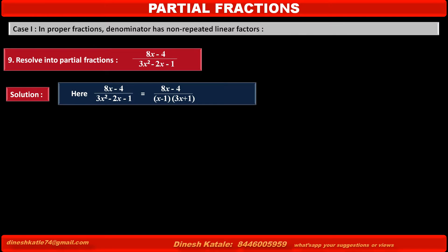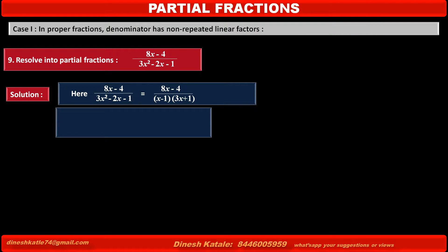Taking A and B as the numerators corresponding to denominators (x - 1) and (3x + 1), the next step is to let the given fraction (8x - 4) / [(x - 1)(3x + 1)] be equal to A/(x - 1) + B/(3x + 1).